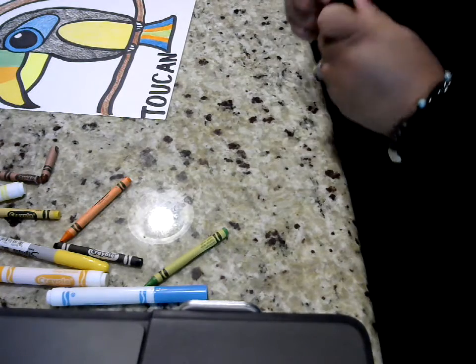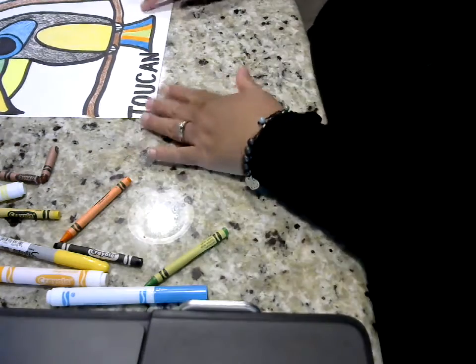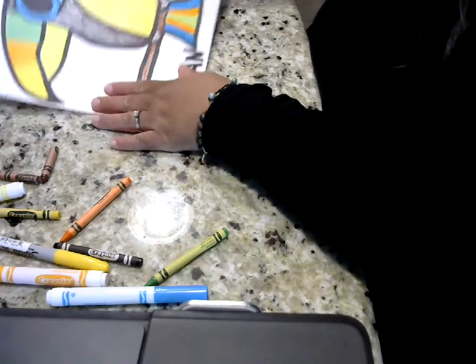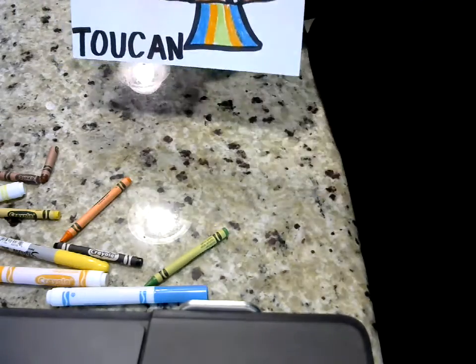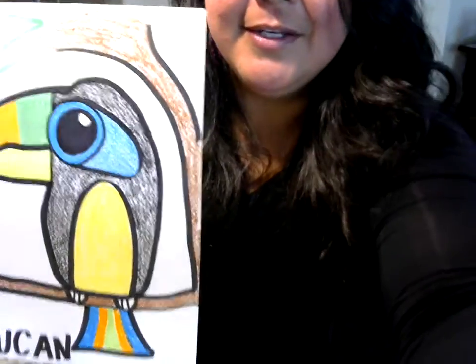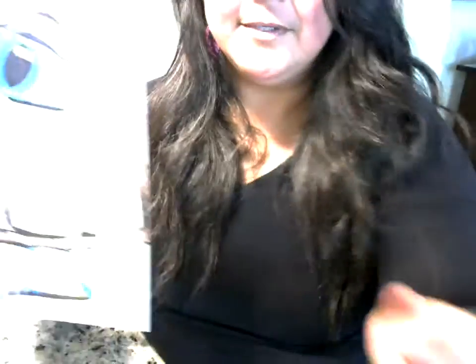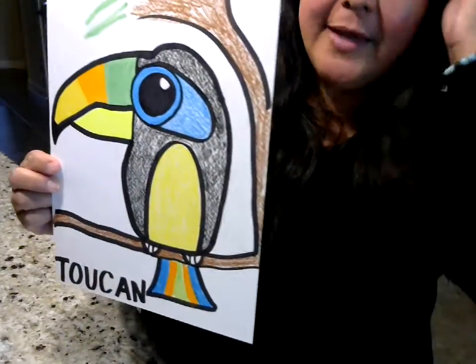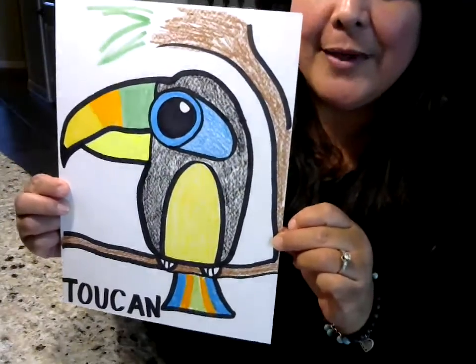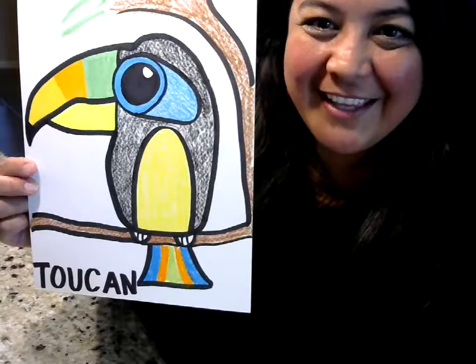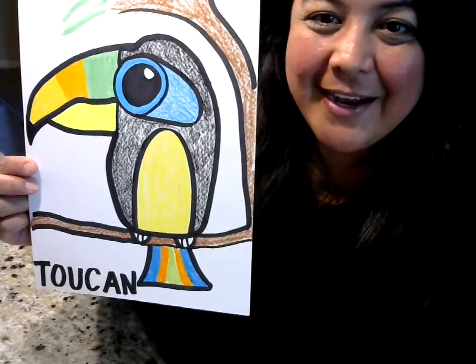And actually you can write a sentence like I see a toucan, but let me see. Okay. All right. I just wanted you guys to be able to have a chance to draw a toucan in your journal. Hope you enjoy this. And I look forward to seeing you guys again soon. All right. Bye.